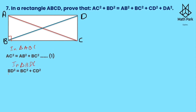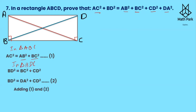Now let us join diagonal BD. In triangle BDC, BD is the hypotenuse, so BD² = BC² + CD². This is equation two. On the right hand side of what is to be proved, we need BC², CD², DA², and AB². We have AB² + BC² from equation one. From equation two we have BC² + CD². Since BC = DA (opposite sides of rectangle), we substitute DA for BC.